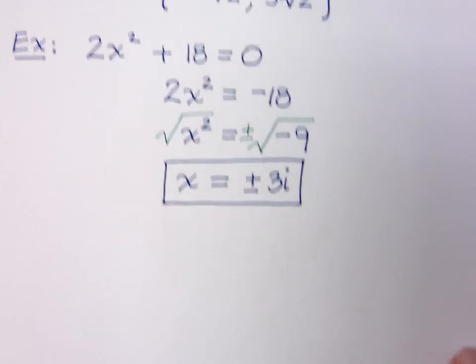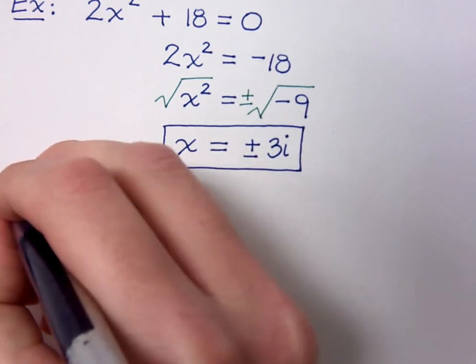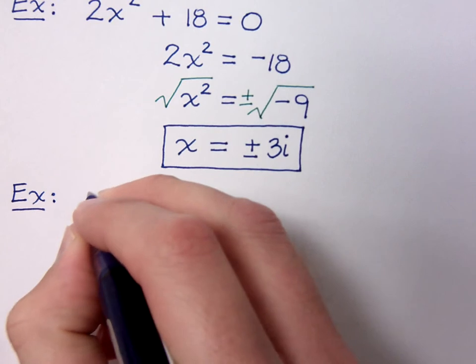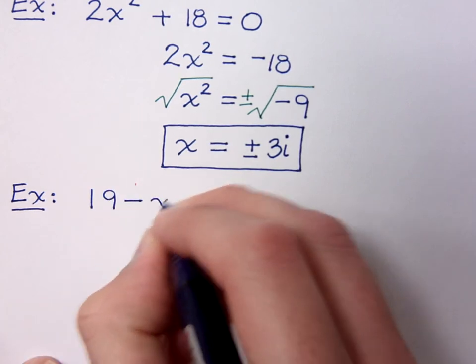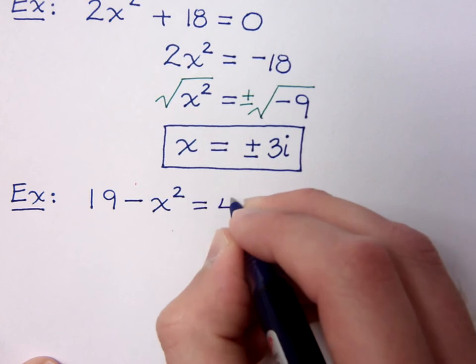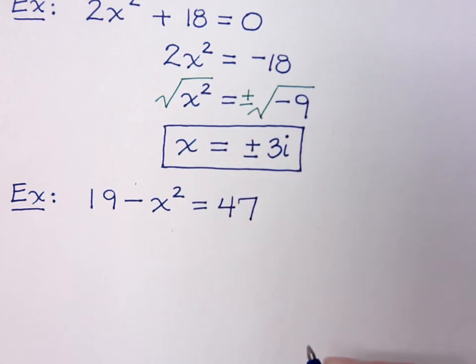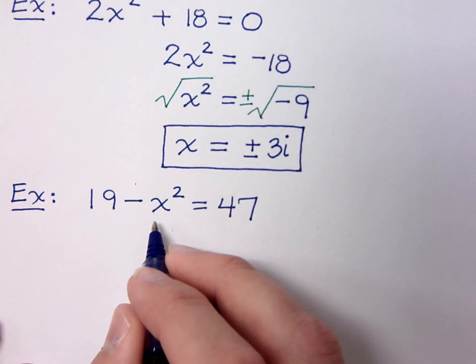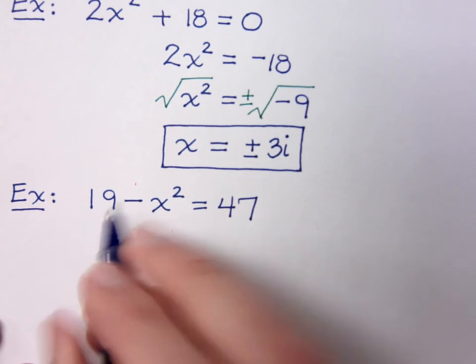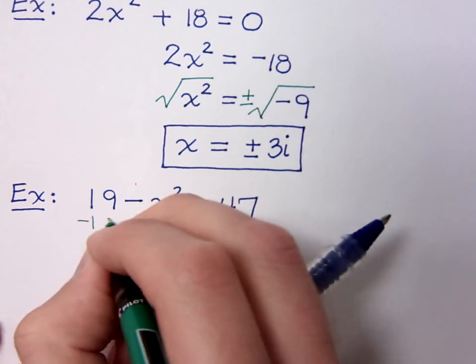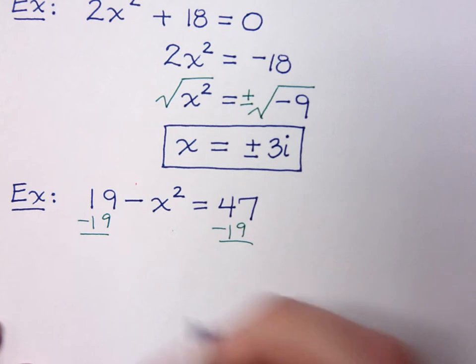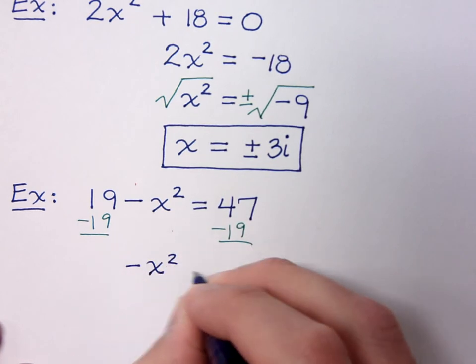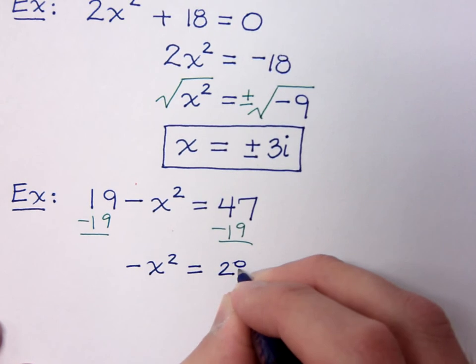Let's try one more of these problems. 19 minus x squared equals 47. Again, following the steps we've talked about for solving the square root property at the very beginning of this video, the first thing you need to do is isolate the square. So, here's your square, and we need to isolate him. So first things first, get rid of the 19. So subtract 19 on both sides.